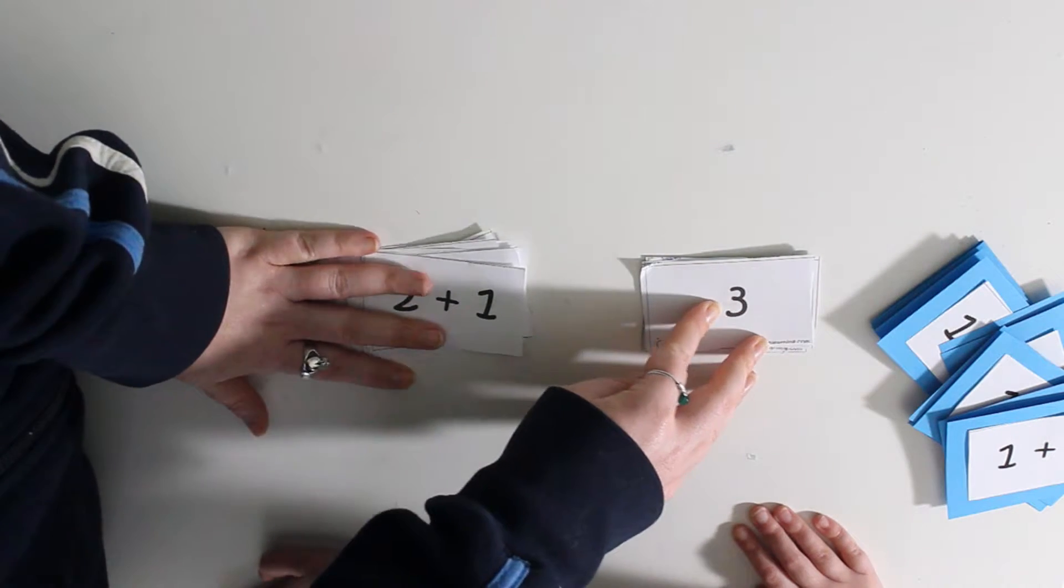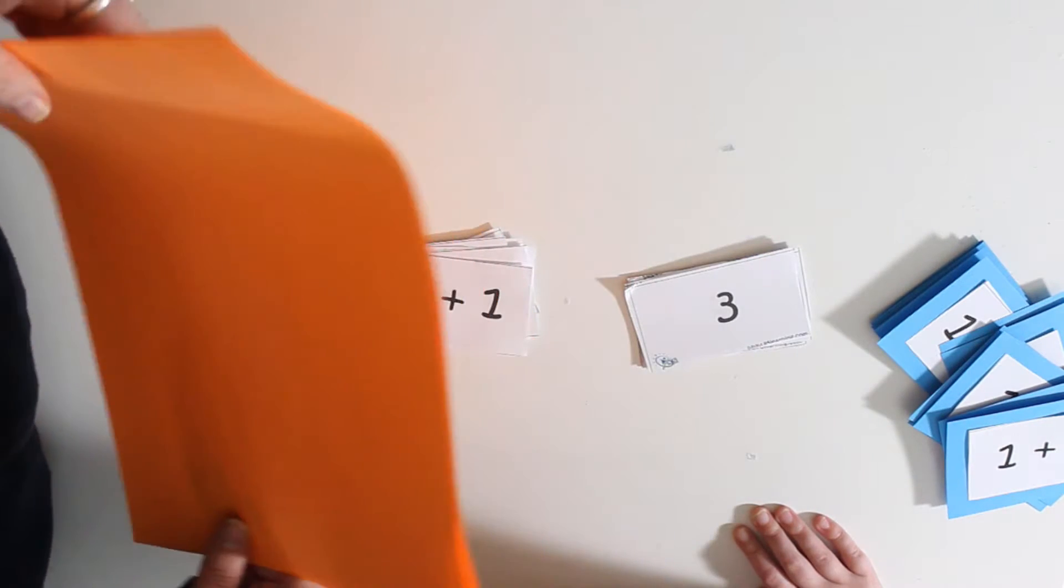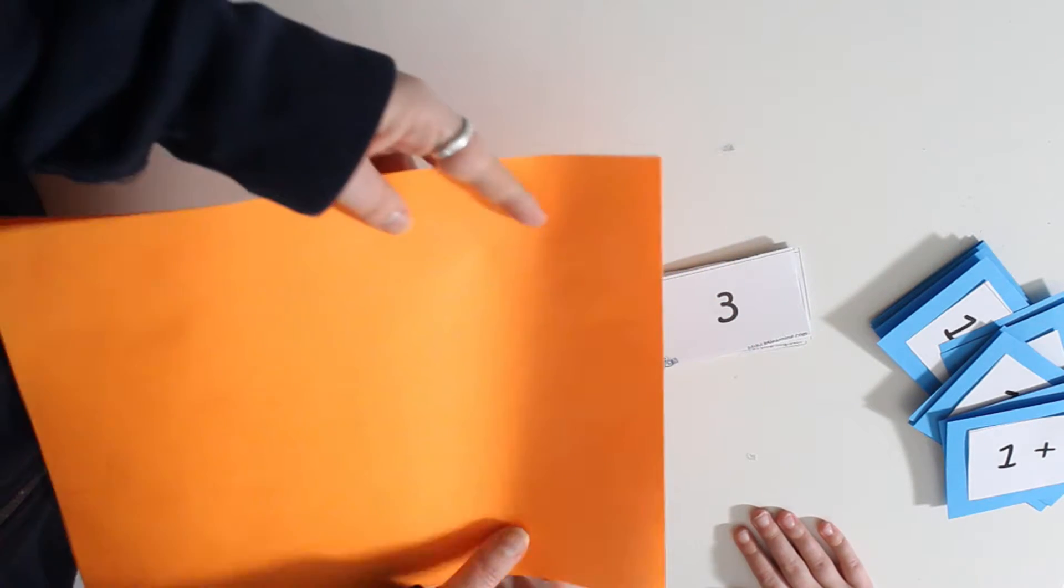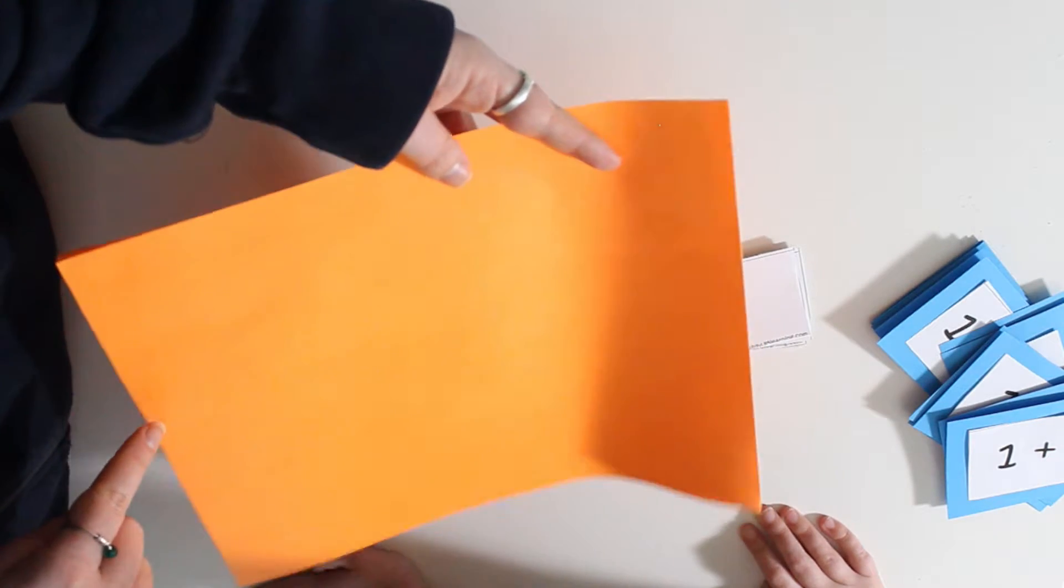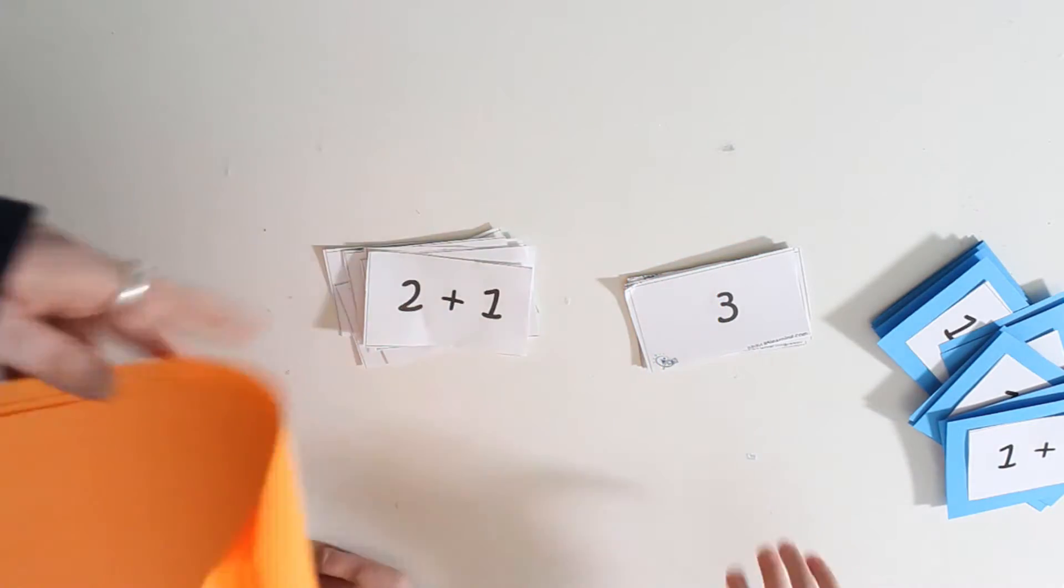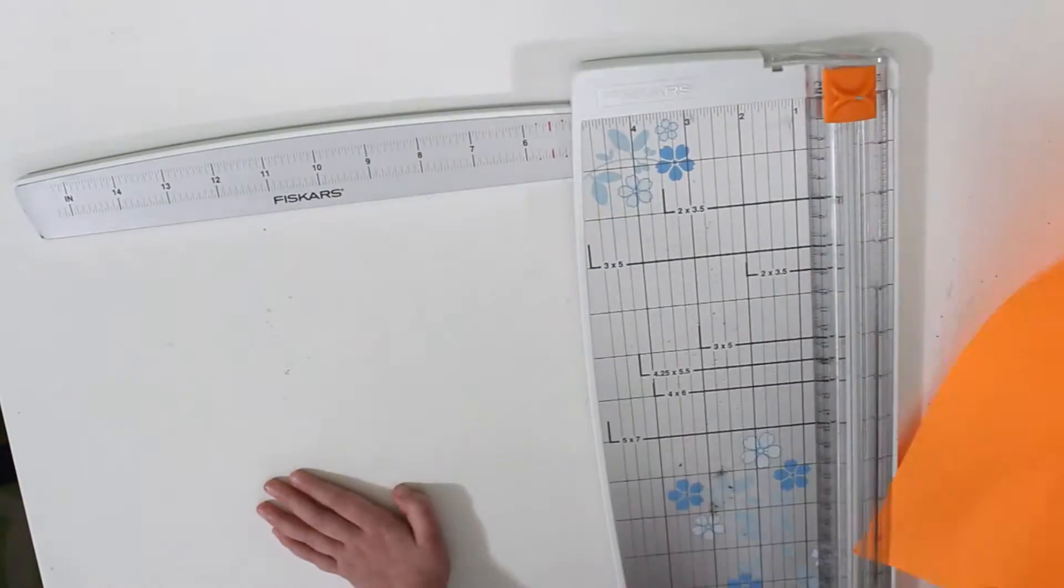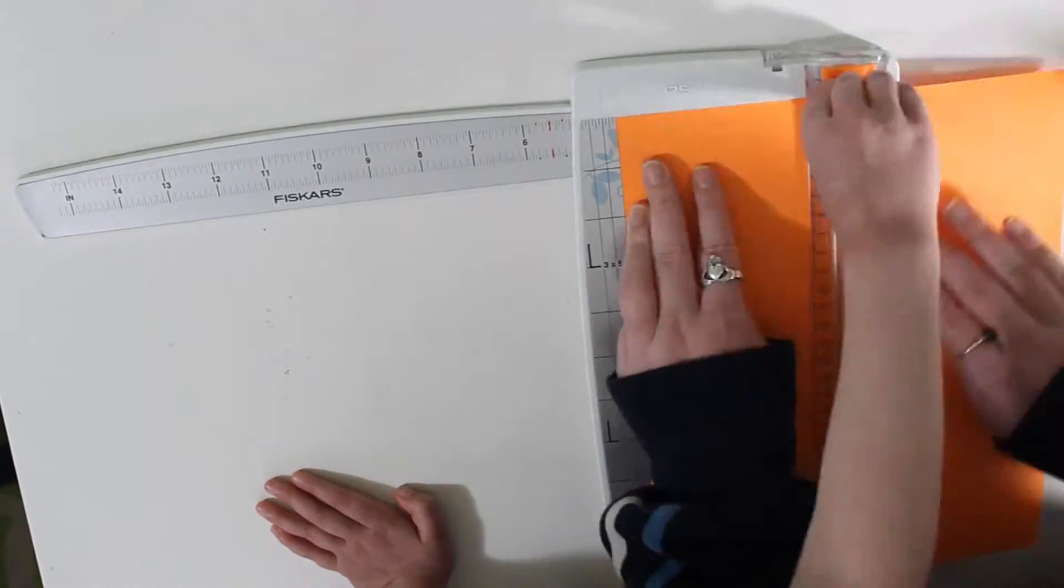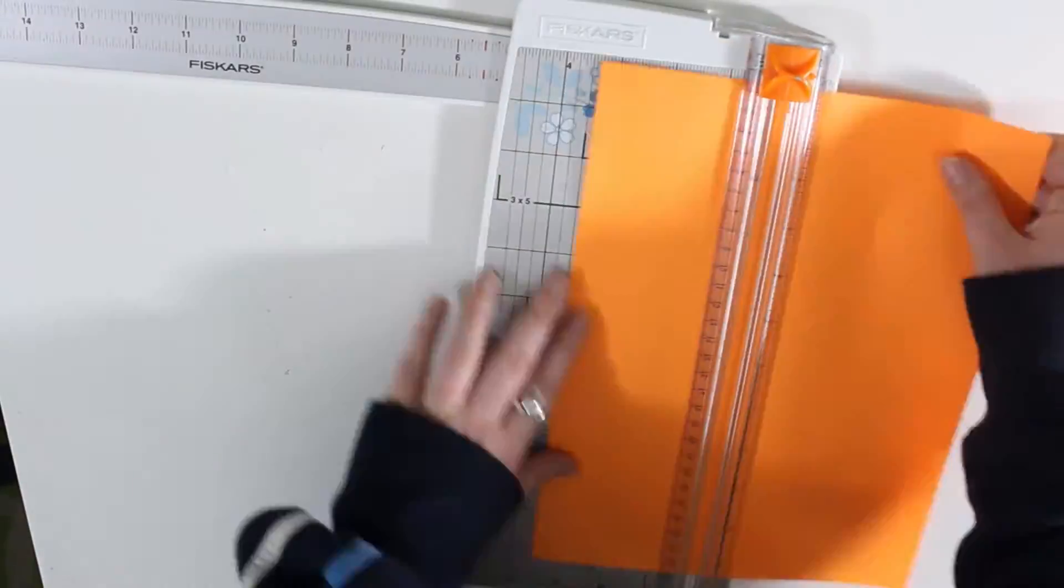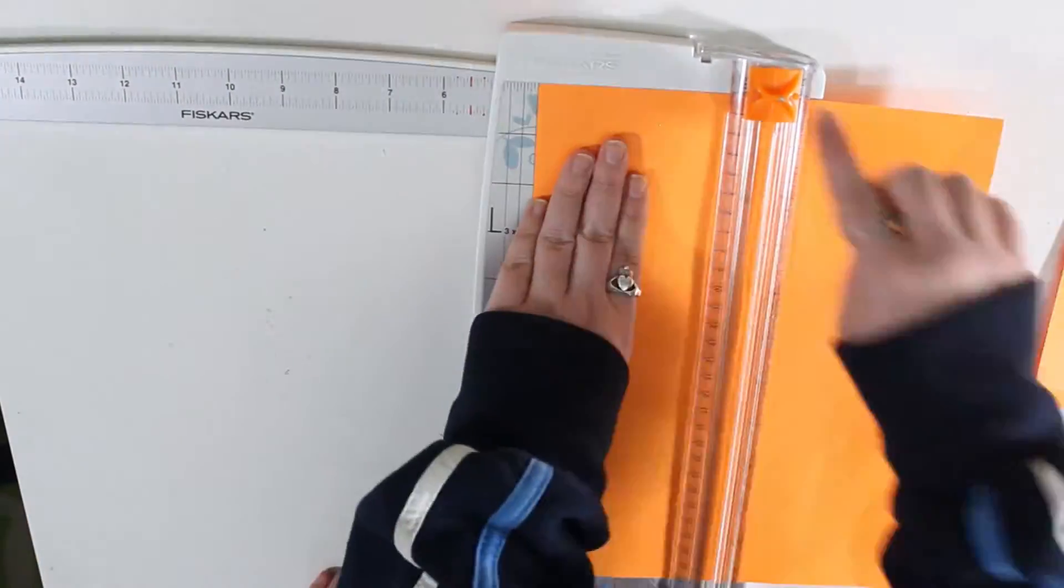So just like before, we have the number sentences and we have the numbers, right? So the next thing we need to do, we want orange to be the backing for these ones, right? For the two plus ones. So what I need to do, I need to slice it down in the middle and then slice it in half that way and slice it again in half the other way.